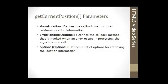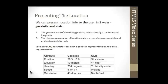The callback method is invoked when the location is retrieved. The error handler defines the callback method invoked when an error occurs. Options define a set of options for retrieving the location. These parameters are used when requesting location permission.